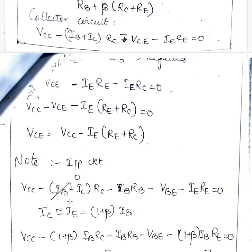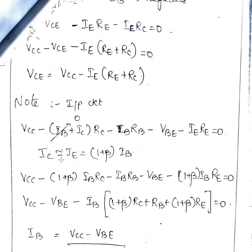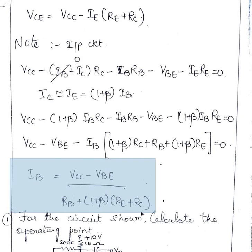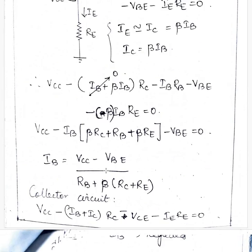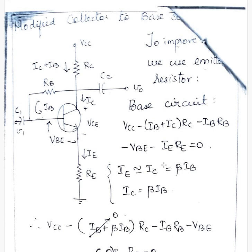So we can also have IB as 0 since it is a very small value and IC is nearly equal to IE equal to 1 plus beta into IB and this can also be the IB equation which does not give a big change. So this is about collector to base bias and modified collector to base bias.